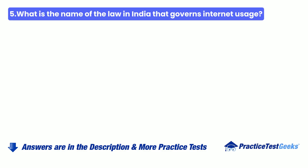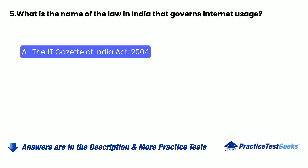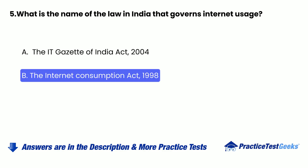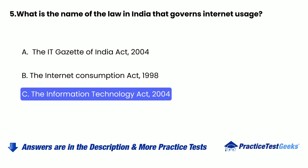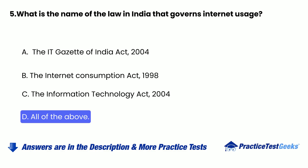Question 5: What is the name of the law in India that governs internet usage? a. The IT Gazette of India Act, 2004. b. The Internet Consumption Act, 1998. c. The Information Technology Act, 2004. d. None of the above.